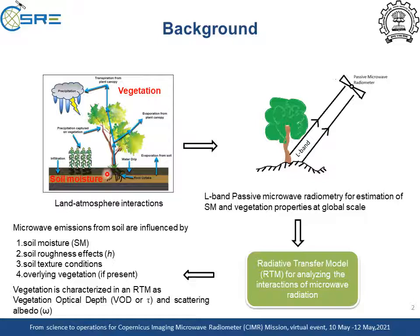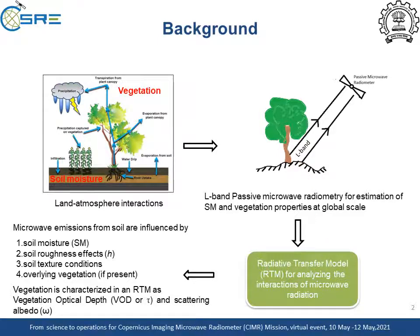Soil moisture and vegetation are two critical drivers in land-atmospheric interactions. Their dynamics can be estimated with the help of L-band passive microwave radiometry by analyzing the interactions of microemissions using radiative transfer models. These microemissions are influenced by the soil properties and the vegetation conditions.